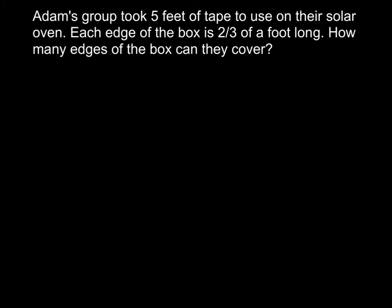This next problem uses some of the information from the previous lessons and turns it around a little bit differently than what we've done before. Adam's Group took 5 feet of tape to use on their solar oven. Each edge of the box is 2/3 of a foot long. How many edges of the box can they cover? That's with the tape. Go ahead and solve it. Draw a diagram to help you. Maybe a tape diagram could be beneficial.